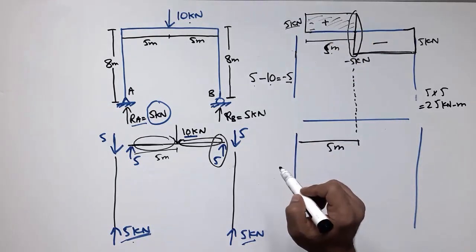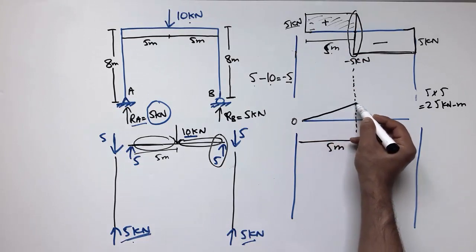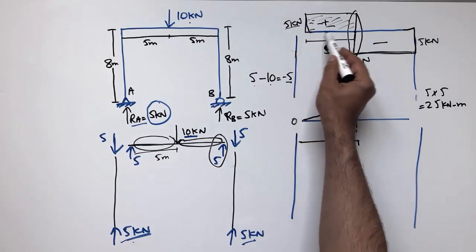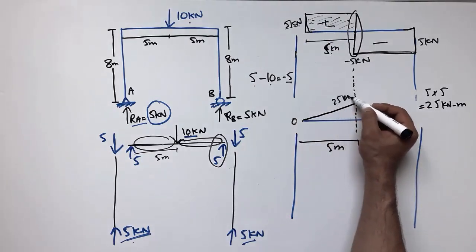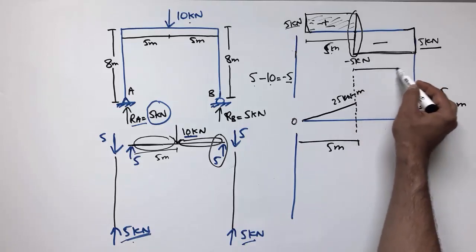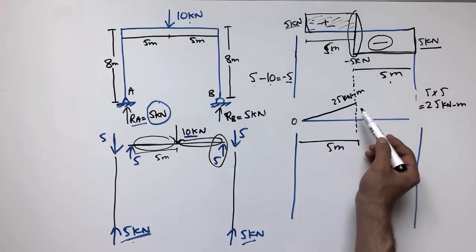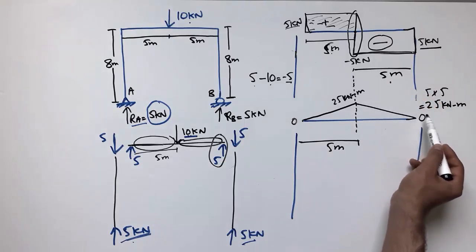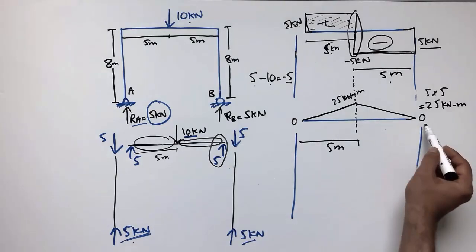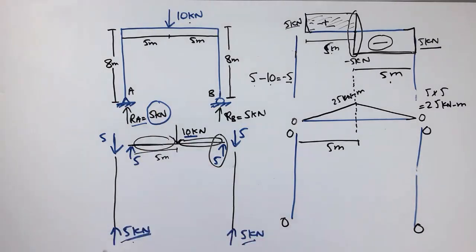The bending moment starts at zero, increases to a maximum at the center. The area of the rectangle is 5 multiplied by 5, giving 25 kN·m — this is the maximum bending moment at the center. The second rectangle on the other side is negative with the same area of 25 kN·m, so subtracting gives zero at the right support. Both supports thus have zero moment, confirming no moment is transferred to the column bases. This is how to draw the shear force and bending moment diagram for a frame with a concentrated load.